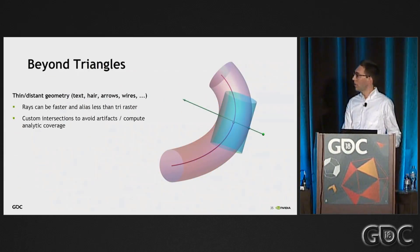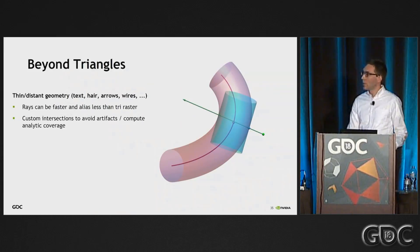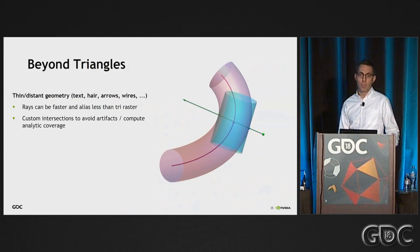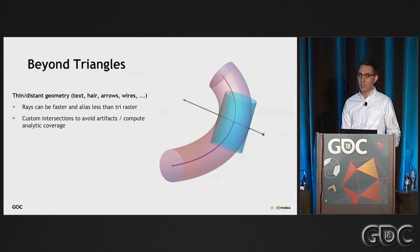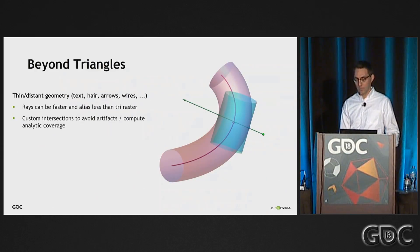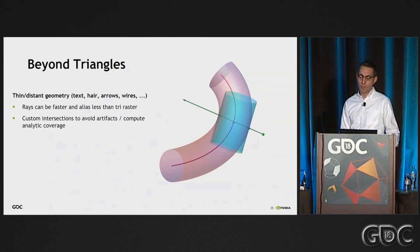One use case is intersecting hair strands for hair rendering using these custom intersection shaders. You can generalize this to other small and thin objects — wires, fences, arrows — things that when distant, triangle rasterization is just not a good solution anymore, where you end up with a flickering mess due to all the small triangles. So in some cases, ray tracing can both be faster and give you better quality for these difficult objects.